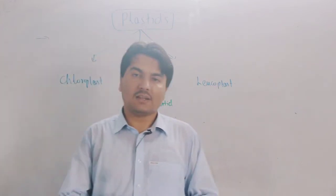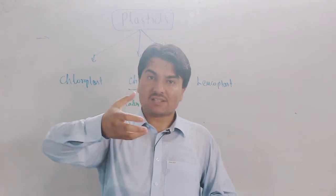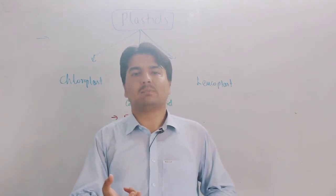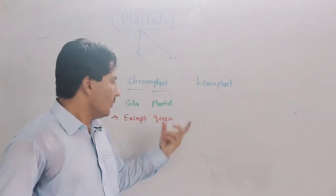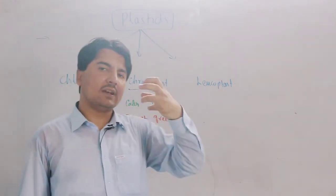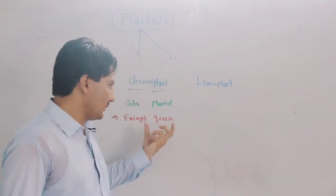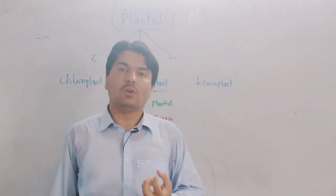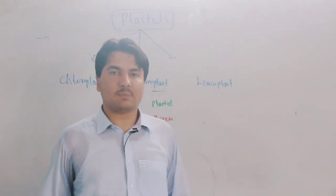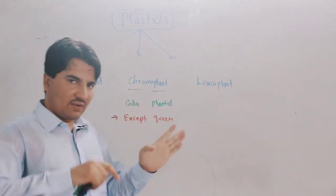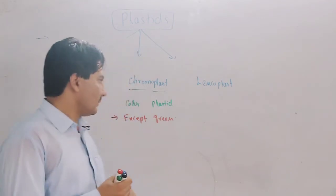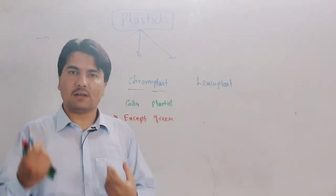What do chromoplasts do? These chromoplasts attract insects for pollination. They help with pollination and dispersal of seeds by attracting pollinators.